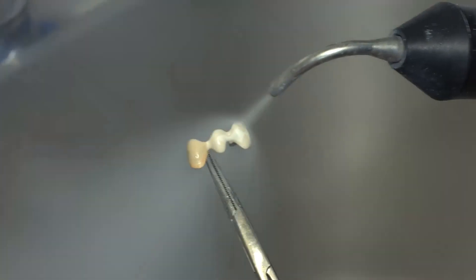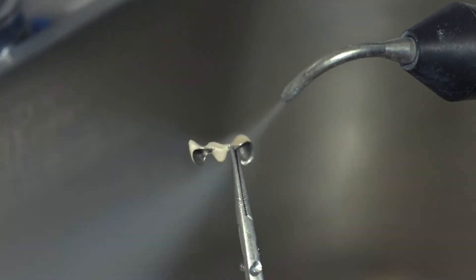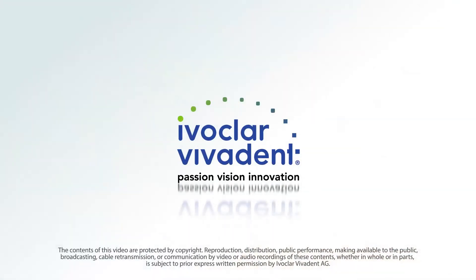Thoroughly clean the opaquer-covered metal framework using the steam jet. Once the framework is clean, you may start with the application of the ceramic.